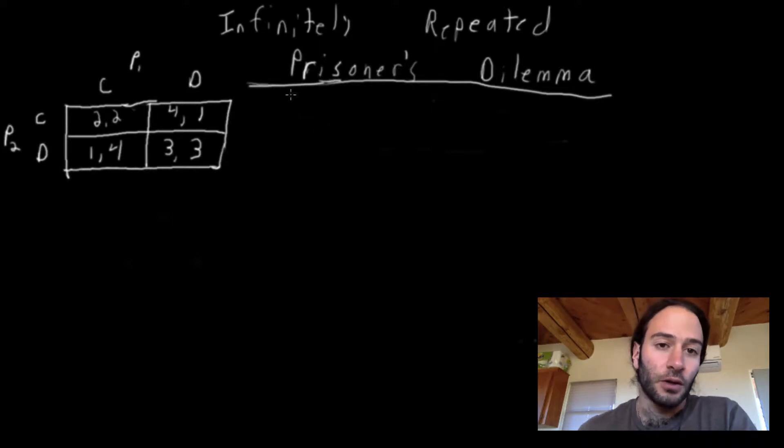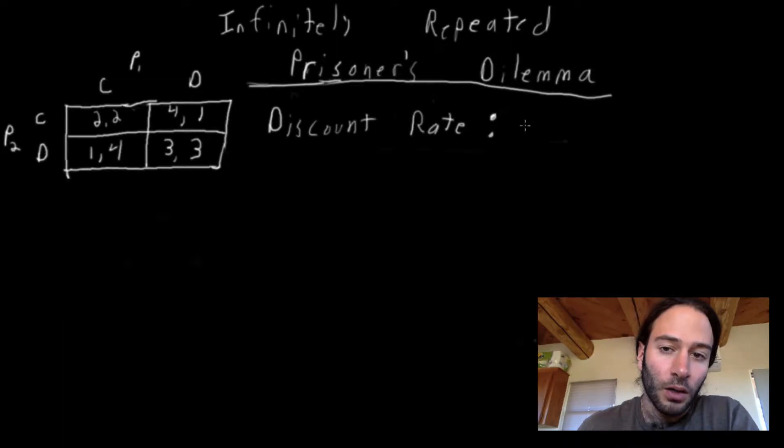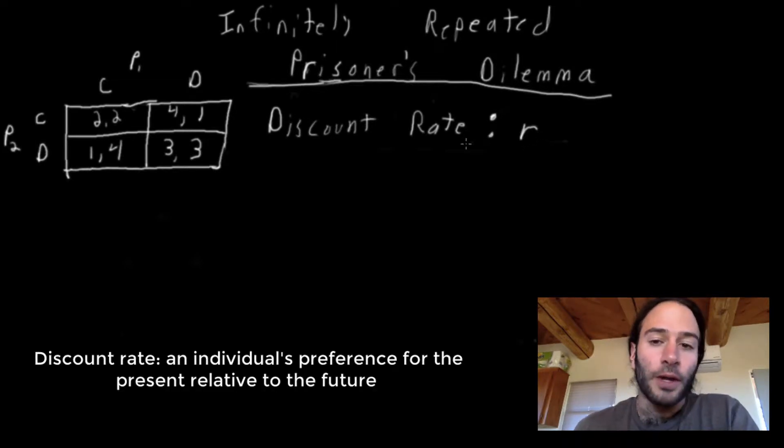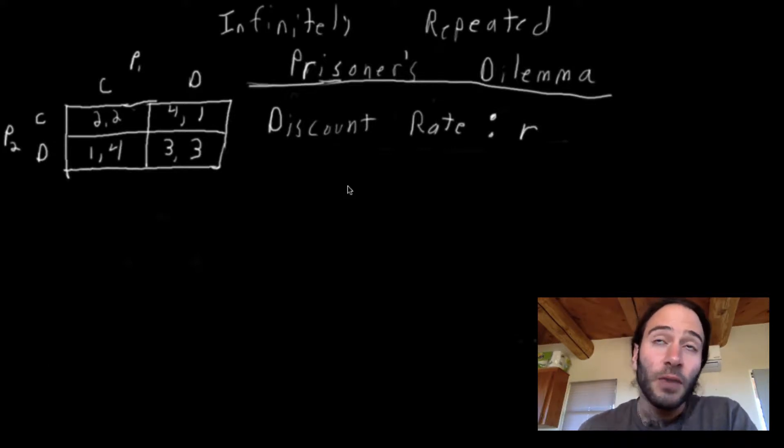Now there's two things that I want to introduce here. One is a discount rate. We're going to call it r. The discount rate represents how much a player values the present relative to the future. This is founded in a very simple idea. If I were to tell you, I will give you $100 today or $100 in two years from now, what would you prefer? Most people would prefer the money today.